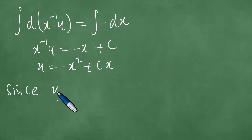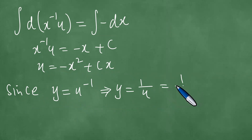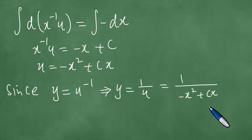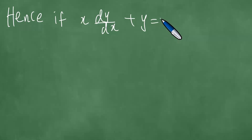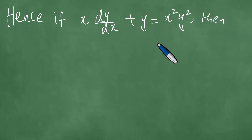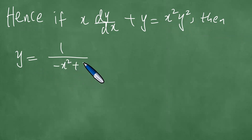We multiply through by x, giving u equals minus x squared plus cx. Since y equals u to the power minus 1, y equals 1 over u, which is 1 over minus x squared plus cx. Hence, if x dy/dx plus y equals x squared y squared, then y equals 1 divided by minus x squared plus cx. This is the answer, and we have solved this problem in detail.